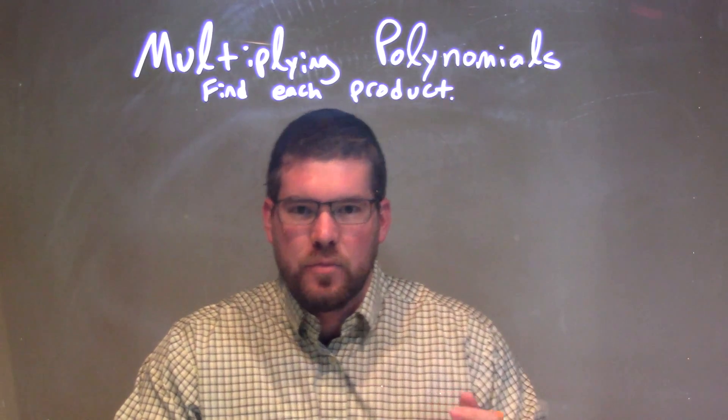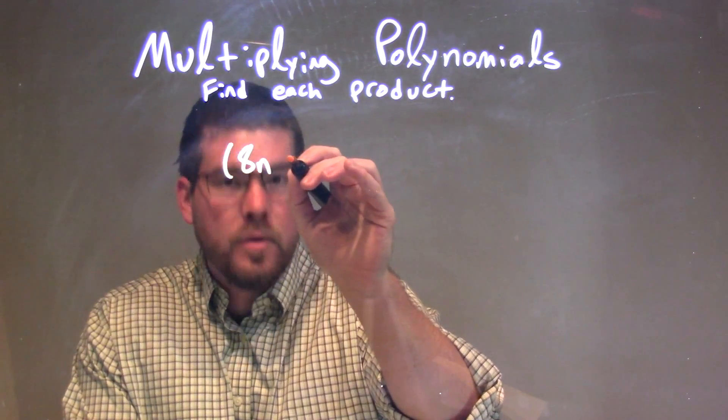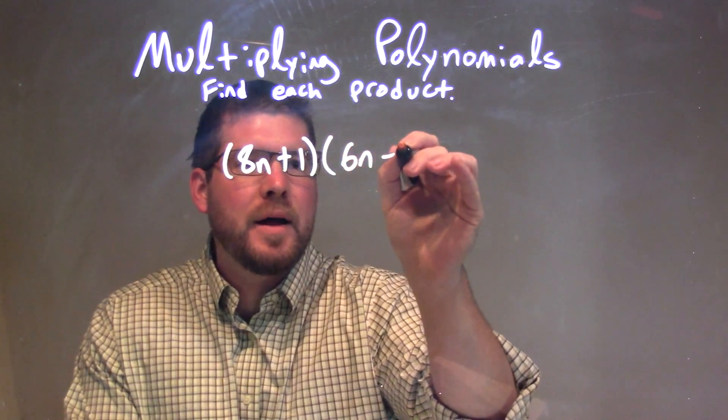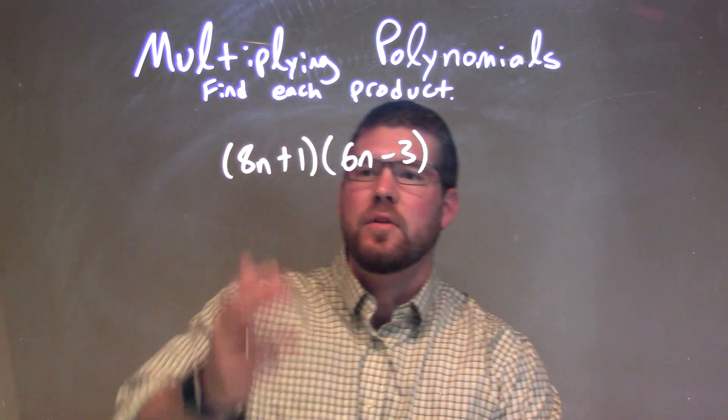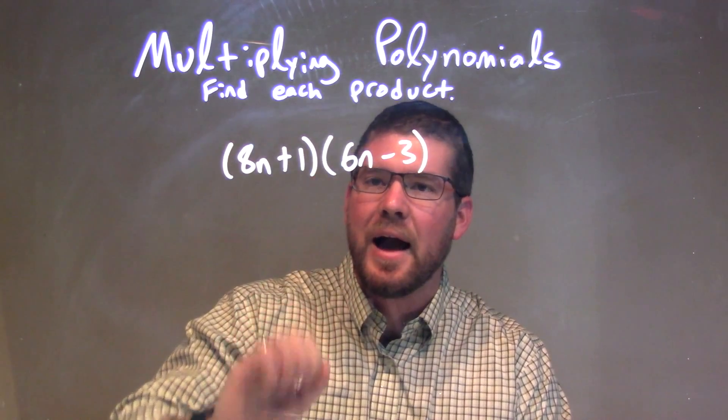If I was given this problem here, (8n + 1)(6n - 3), I have two parentheses that I'm going to multiply out.